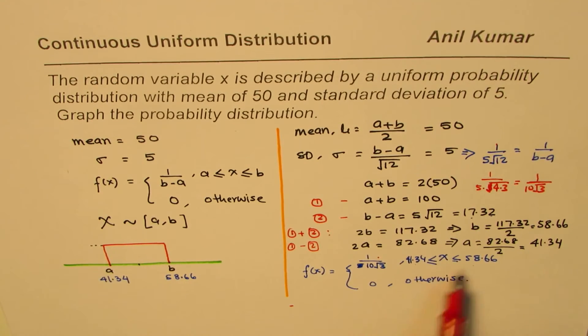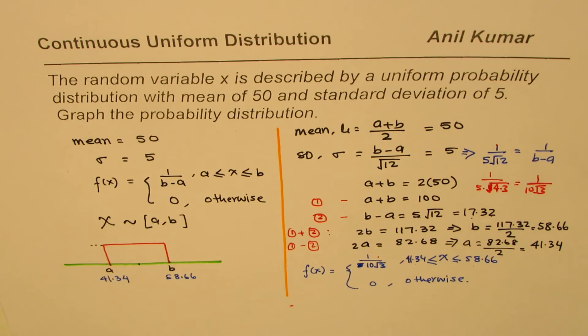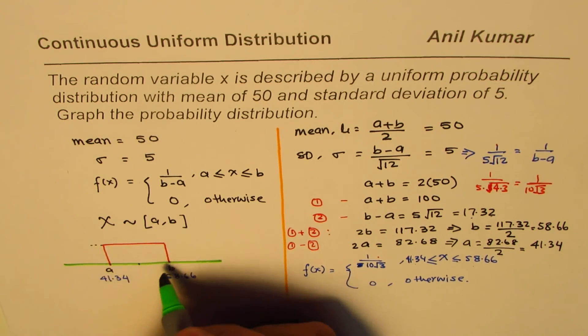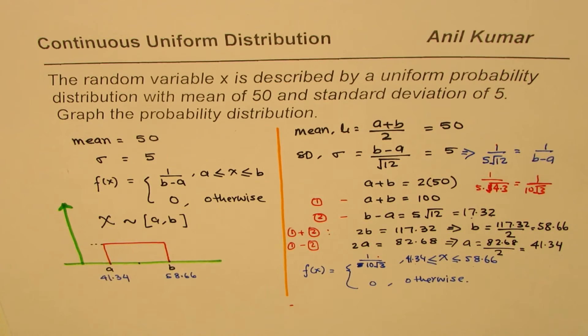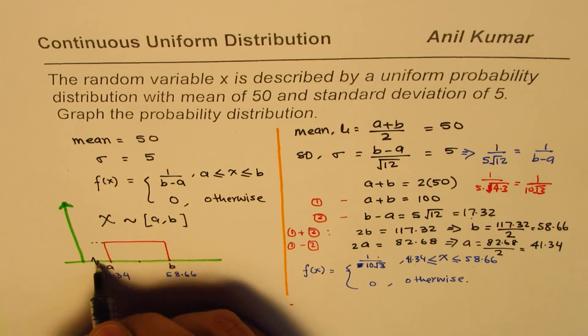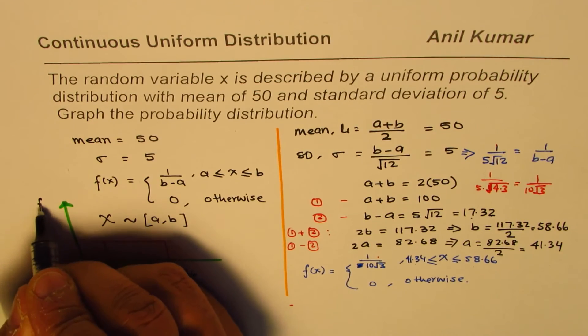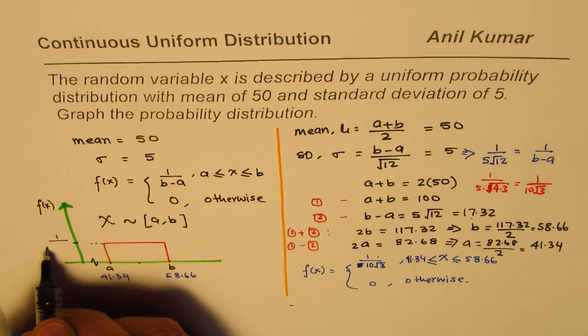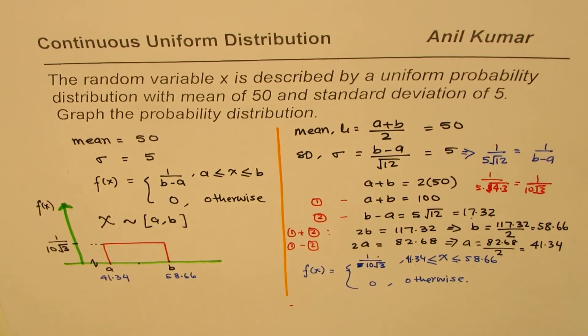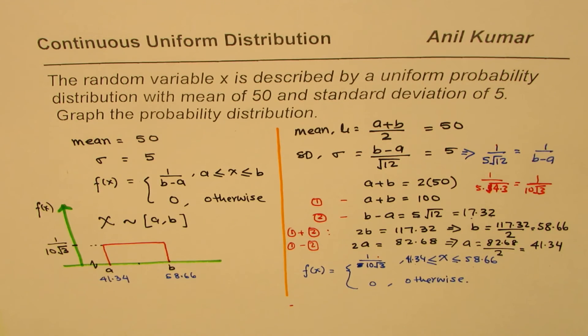And these are the limits of A and B. Now when we have to sketch it, now we know this is the kind of sketch. So let me sketch it here. And since these values are pretty large, let me make a break here and call this as f of x. And this value here is 1 over 10 square root 3. So that is how you could actually get your probability distribution for uniform function random variable as shown here.